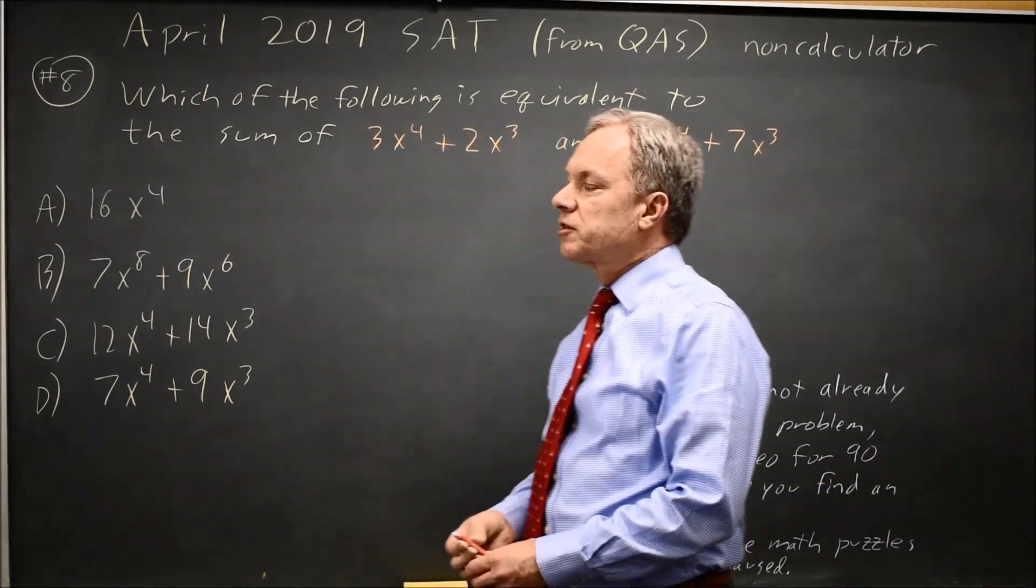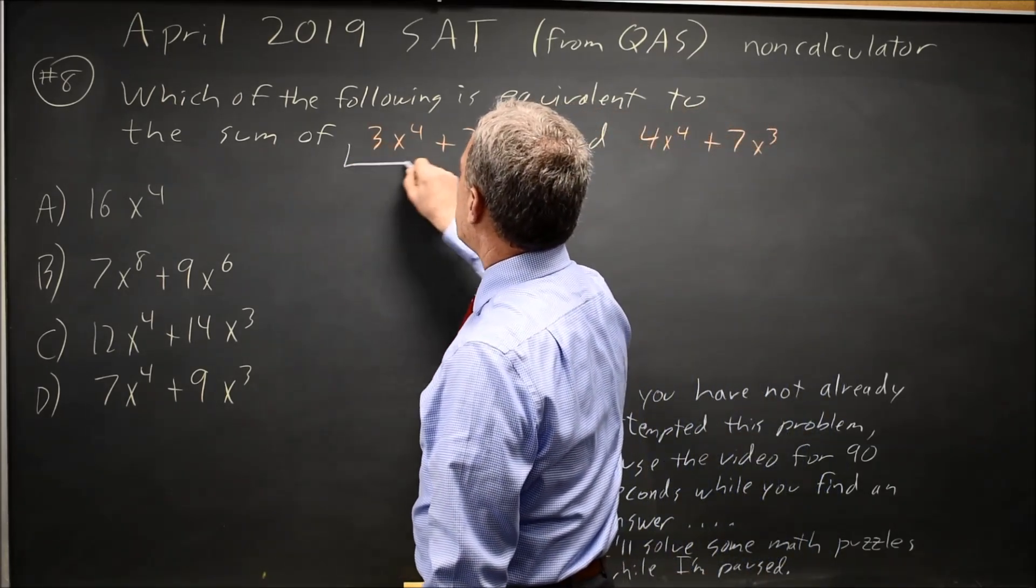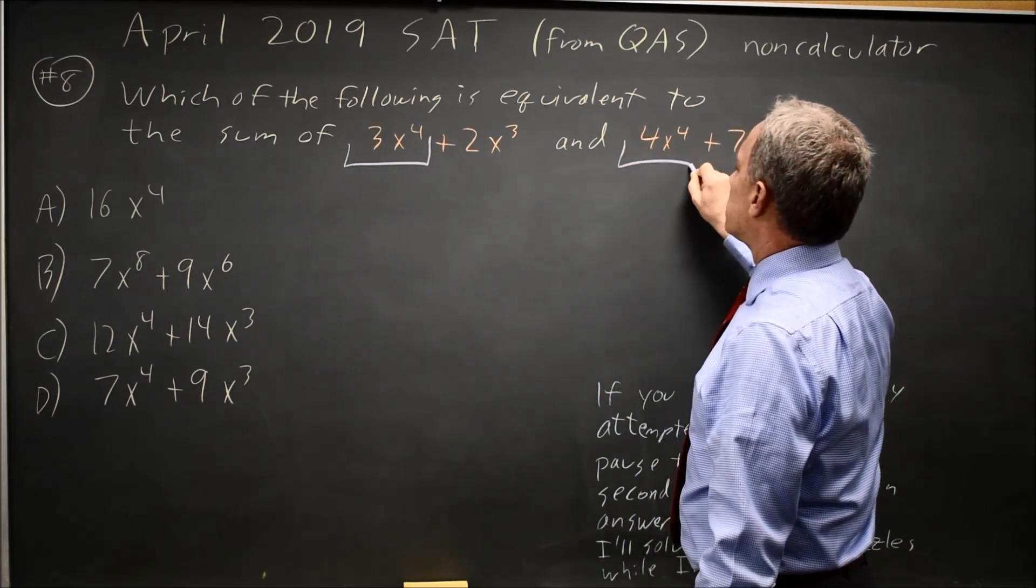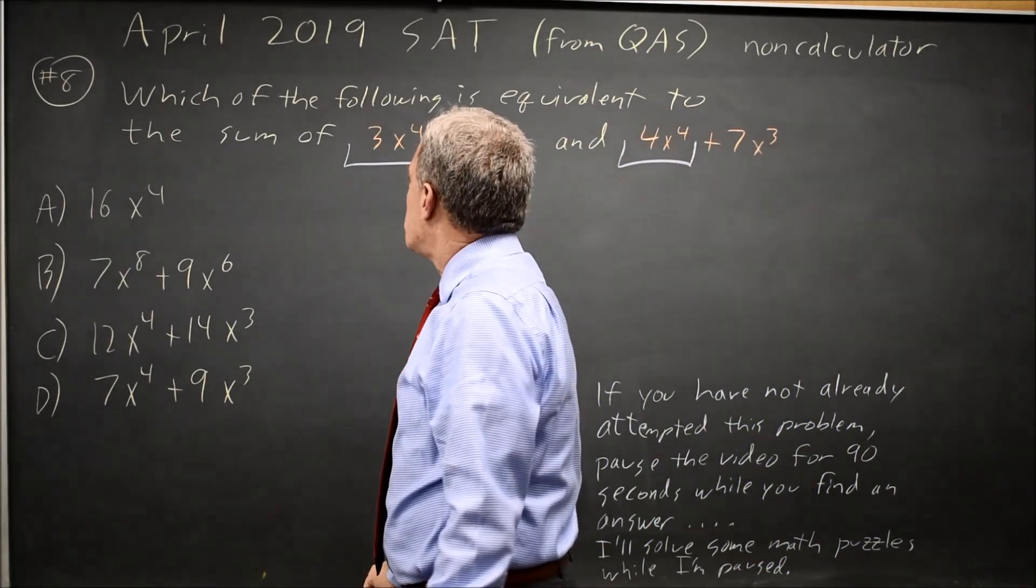College Board often asks you to simplify or combine polynomials, and the way we'll do that is we'll take like terms. 3x to the 4th and 4x to the 4th are both x to the 4th terms, and you add them.